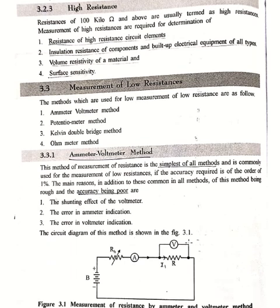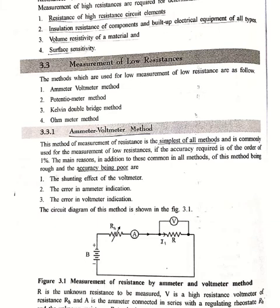Coming to high resistance: high resistance includes all resistances of 100 kilo-ohms and above. The measurement of high resistance is required for the determination of resistance of high-resistance circuits, insulation resistance of various components, volume resistivity of materials, and surface resistivity. Now, for the measurement of low resistance, there are four categories by which we can measure it.